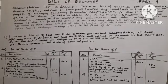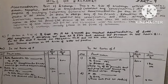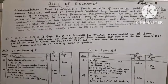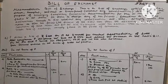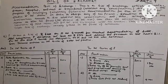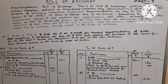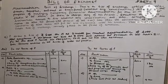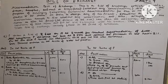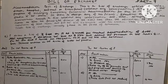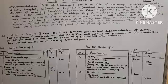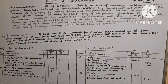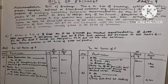To oblige a friend, sometimes a reputed businessman accepts a Bill without any consideration and simply lends his name so that his friend, the drawer of the Bill, can take advantage of that reputation and get the Bill discounted with his banker. This is not a trade Bill of Exchange usually found in the field of commerce.